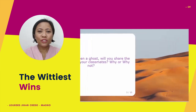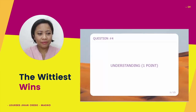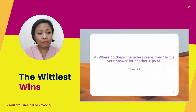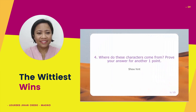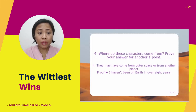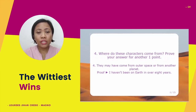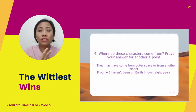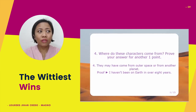Now let's go back to Group 1, understanding for 1 point. Where do these characters come from? Prove your answer for another 1 point. They may have come from outer space or from another planet. Here's the proof: 'I haven't been on Earth in over 8 years.' This means these characters are already living outside the Earth — in outer space or maybe on another planet.